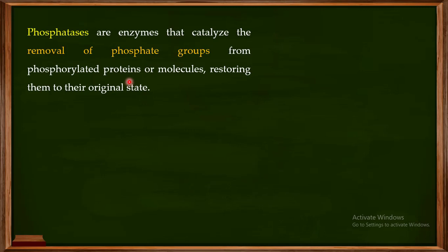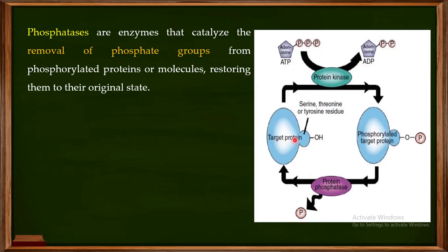The removal of the phosphate group from phosphorylated proteins or molecules restores them to their original state. For example, if this is a target protein, protein kinases will add a phosphate group to it. The protein kinase uses ATP as the source of the phosphate group, converting ATP into ADP and adding that phosphate group to the target protein, which is then phosphorylated.